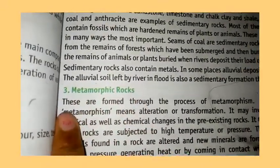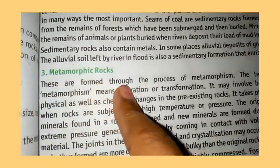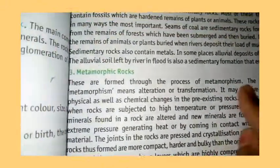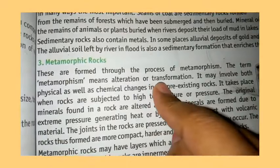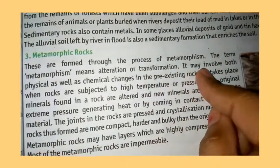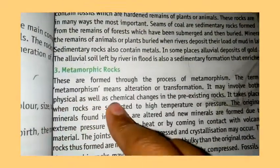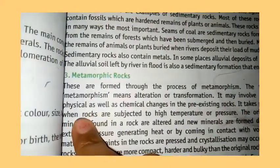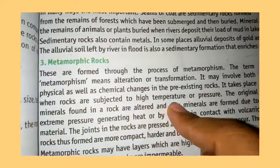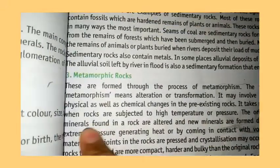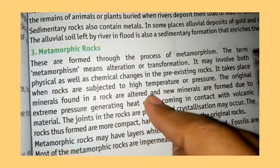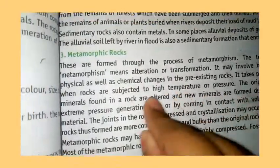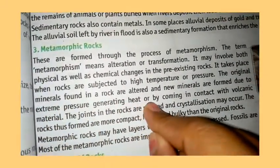Metamorphic rocks are formed through the process of metamorphism. The term metamorphic means alteration or transformation. They involve both physical and chemical changes in pre-existing rock. This takes place when rocks are subjected to high temperature and pressure, and the original minerals are altered to form new minerals.